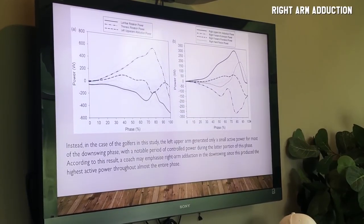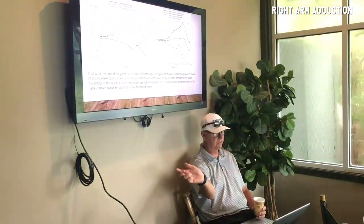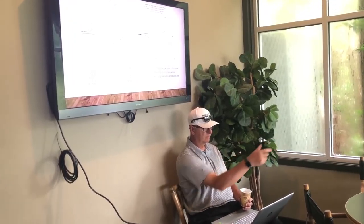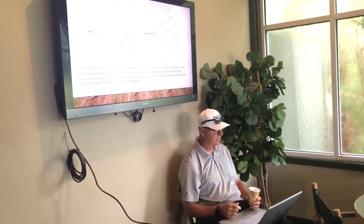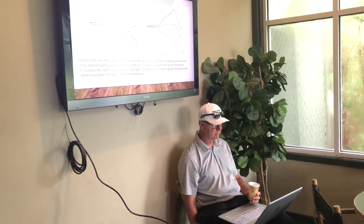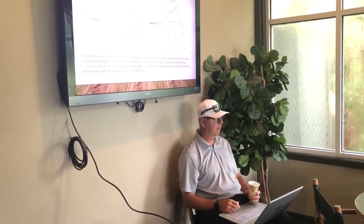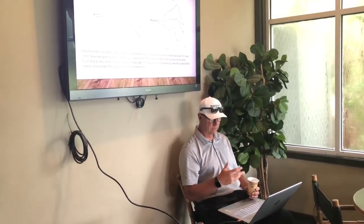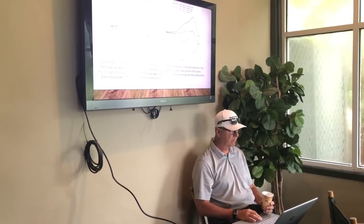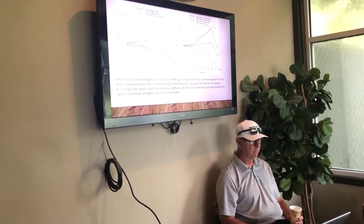We see the highest activation in the pecs, and we see the wrist going to extension then flexion. That's it — and it just shows that the left arm provides very little to the power of the downswing. You can see that on the graph, right here — this is where the left arm provides very little.